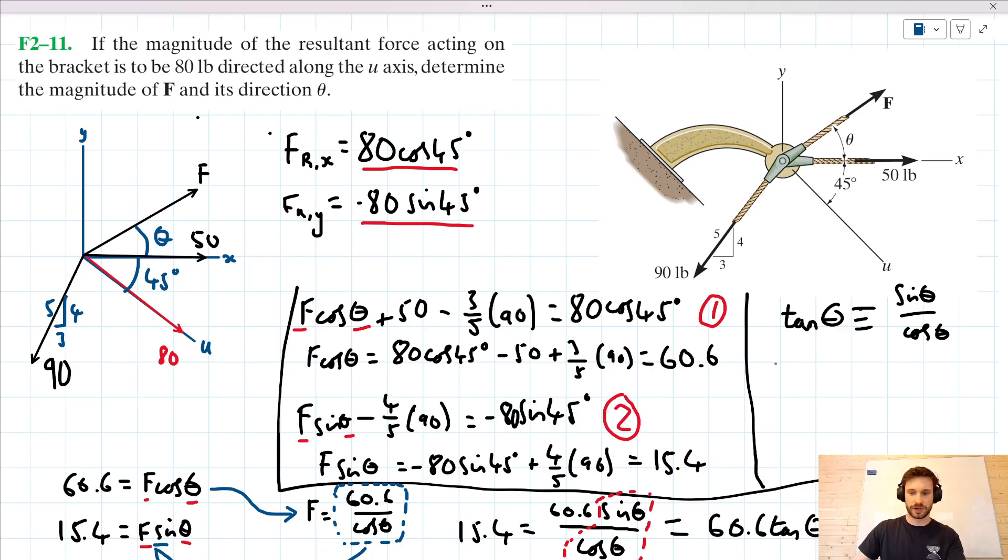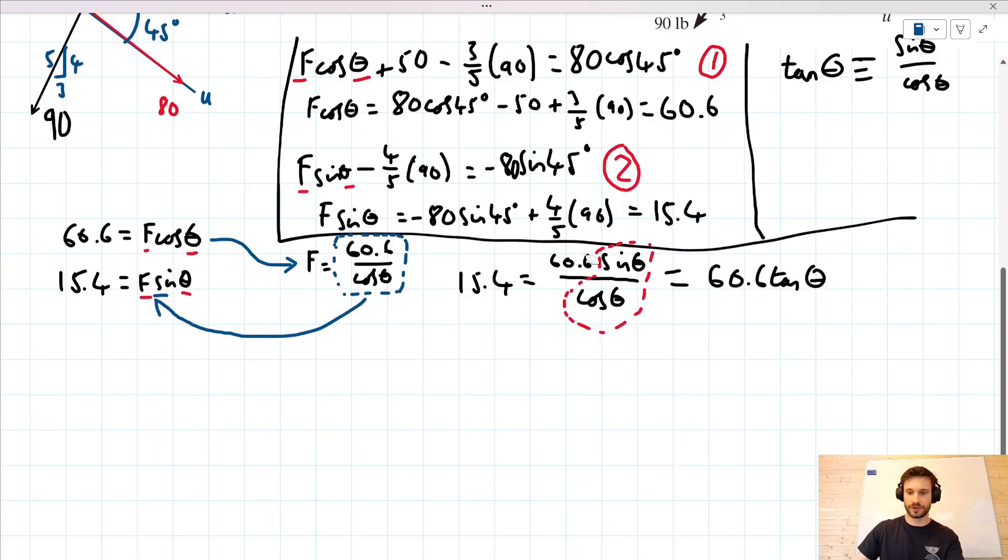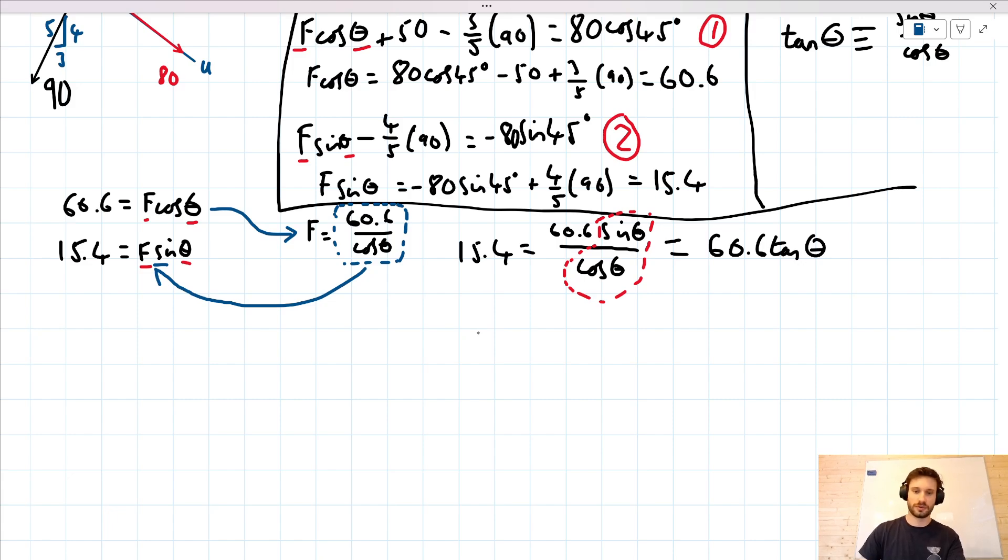So this is a chain equation here. We can write it more simply as 15.4 equals 60.6 tan of theta. And actually we can divide both sides by this 60.6. So we'll have 15.4 over 60.6 equals tan of theta.